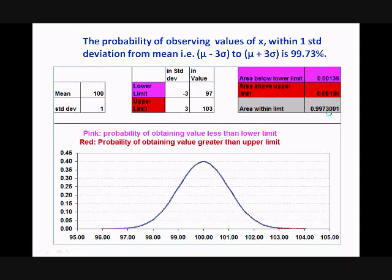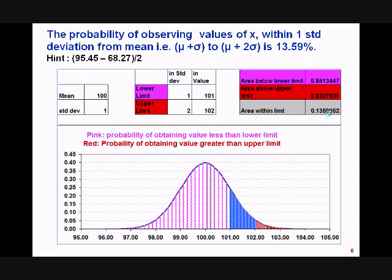Now a slightly more complicated case: what is the area between mu plus 1 sigma and mu plus 2 sigma? With a mean of 100 and standard deviation of 1, we are asking how many balls will have dimensions between 101 mm and 102 mm — that is, the area from mu plus 1 sigma to mu plus 2 sigma.